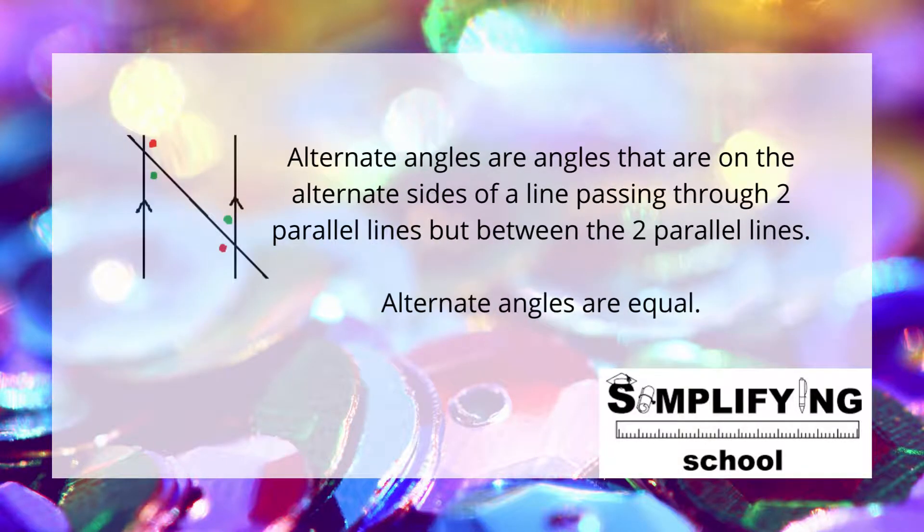Here we have the two vertical lines of the N that are parallel. We also have a line passing through these parallel lines. Indicated on the drawing are alternate angles. They lie on the inside of the two parallel lines but on the opposite side of the line passing through the parallel lines. Alternate angles are equal.